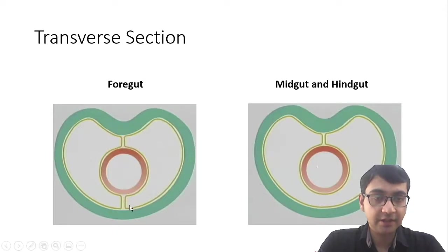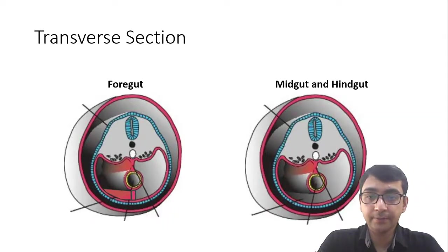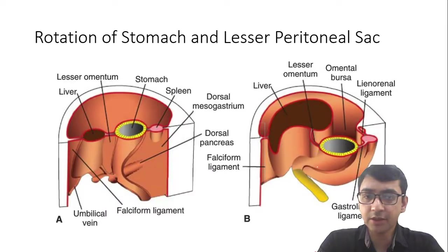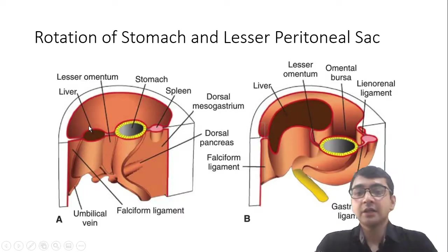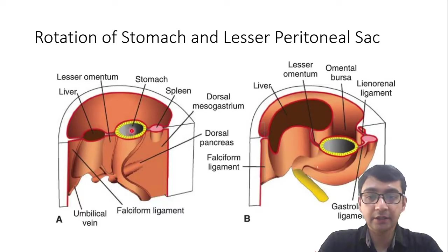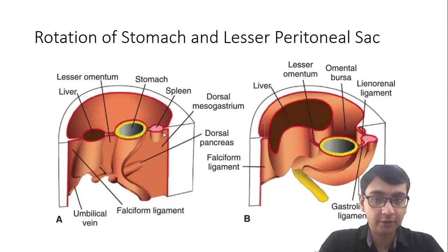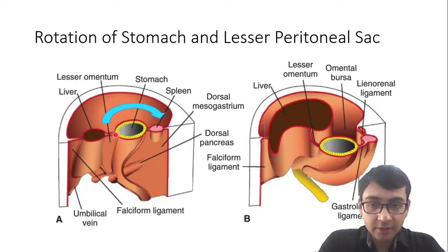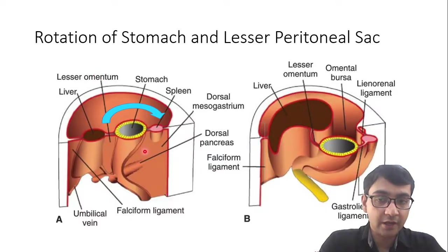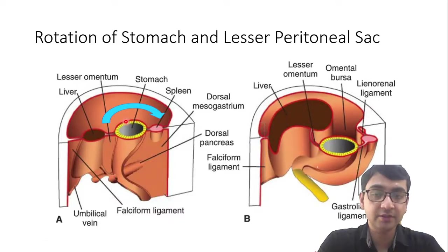For the foregut the gut is surrounded by mesentery and has both dorsal and ventral mesentery; for the midgut and hindgut we only have the dorsal mesentery. The stomach had a dorsal mesogastrium and a ventral mesentery. In front of the stomach is the lesser omentum and the falciform ligament; between them is the liver. Behind the stomach, the spleen develops within the dorsal mesogastrium. Before rotation, when the stomach rotates — chiefly due to the growth of the liver — the anterior margin is pulled to the right and the posterior margin is pushed to the left.